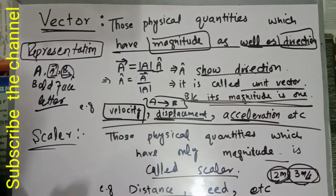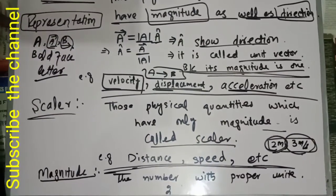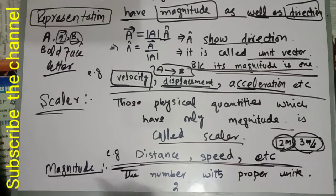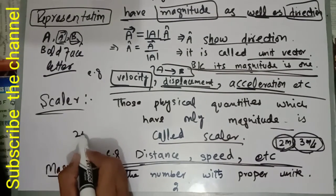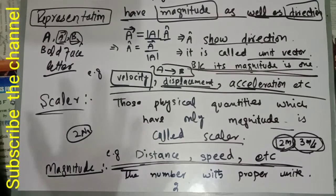Magnitude: the number with proper unit is called magnitude. The number with proper unit is called magnitude. For example, two newton - the number with proper unit.